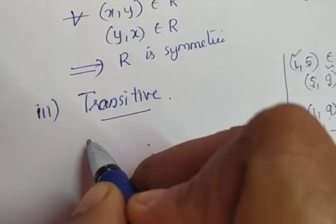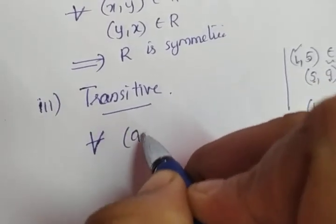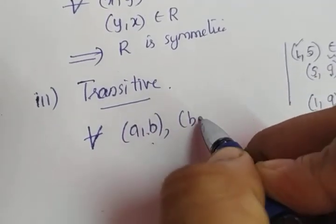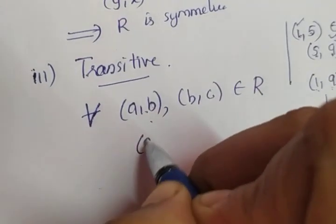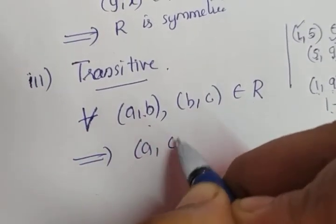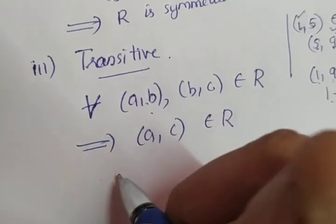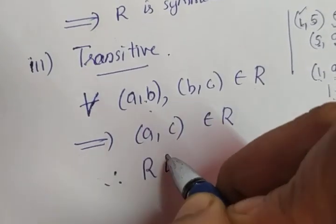To write the general case: for all (a,b), (b,c) element of R, what will it imply? (a,c) element of R. Therefore, R is transitive.